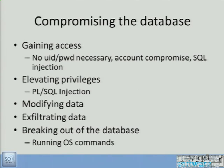In a typical database compromise there are several stages. First, gaining access. Once they've managed to gain access, they need to elevate privileges to have full control over the database server. Once they've got the requisite privileges, they might want to modify data, exfiltrate data, and thereafter use that database server as a staging platform to attack the rest of the network — breaking out of the database to run operating system commands and download their toolkits.